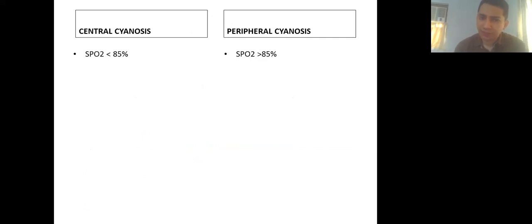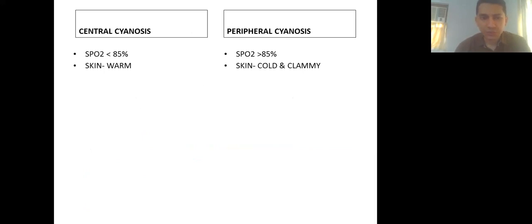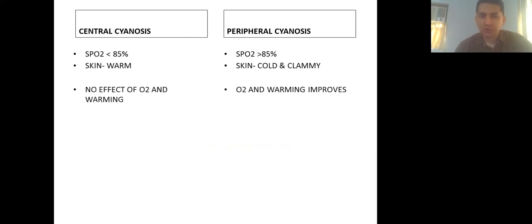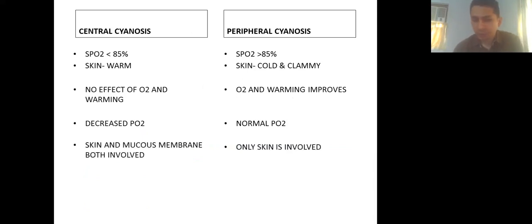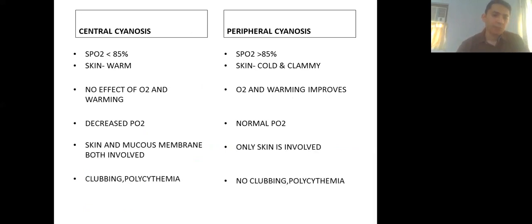Key differences: decreased PO2 on arterial blood gas in central cyanosis. Importantly, mucous membranes of the oral mucosa are always involved in central cyanosis — you will find distinct discoloration of the mucous membrane. Clubbing and polycythemia come late in the picture but are also findings that differentiate central from peripheral cyanosis.